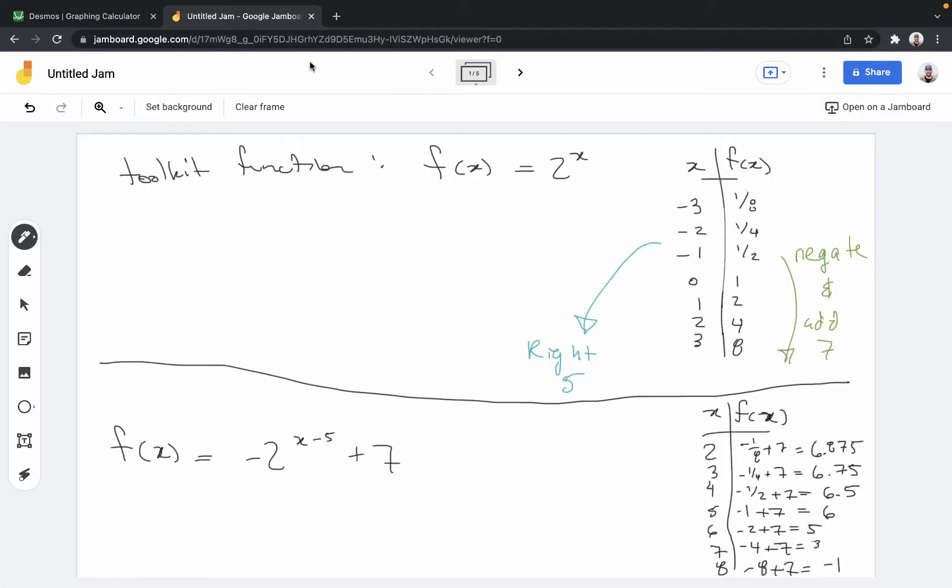You can see that process with these tables I made. So here's 7 different inputs. I shift them to the right by 5, so I added 5 to each of them. And then with the outputs, I negated and added 7, so negative 1/8 plus 7, all the way up to negative 8 plus 7.